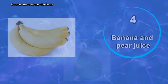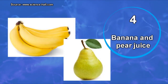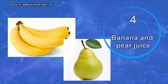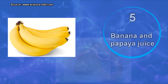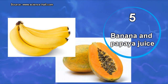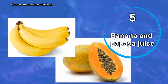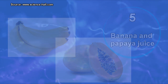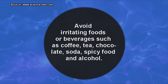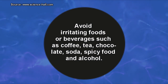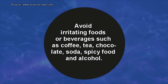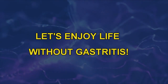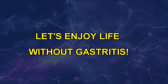4. Banana and pear juice — stomach cells create a thicker barrier against acid when these fruits are consumed. 5. Banana and papaya juice, which can also be consumed with plain yogurt or skimmed milk. Finally, it is recommended to avoid irritating foods or beverages such as coffee, tea, chocolate, soda, spicy food, and alcohol. Let's enjoy life without gastritis.